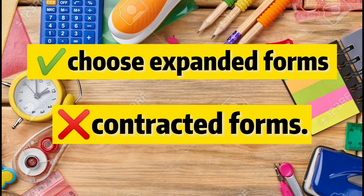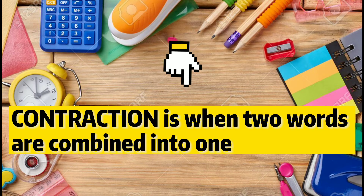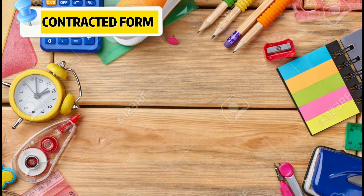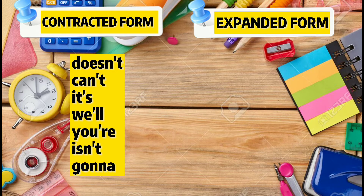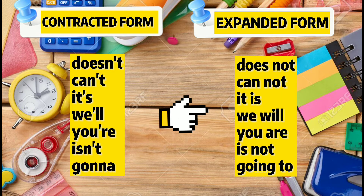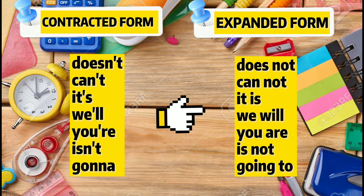To make your writing formal, choose expanded forms over contracted forms. Contraction is when two words are combined into one. Contracted forms: Doesn't, Can't, It's, We'll, You're, Isn't, Gotta. Expanded forms: Does not, Cannot, It is, We will, You are, Is not, Going to.